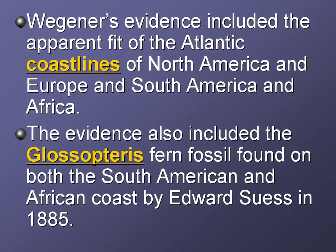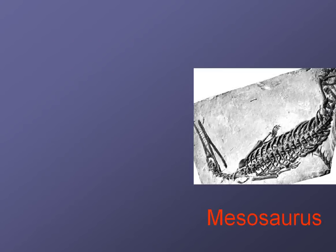He also found the Glossopteris fern fossil — a fossil found on both sides of the Atlantic Ocean, in South America and Africa. This fern fossil was too large and probably wouldn't have been able to survive a trip across the Atlantic Ocean. This evidence was first brought to light by Edward Suess. Notice that Wegener is using evidence that other people came up with — but that's what science is about. Science is always about standing on the shoulders of those who came before you, taking what they've learned and taking it to the next level.